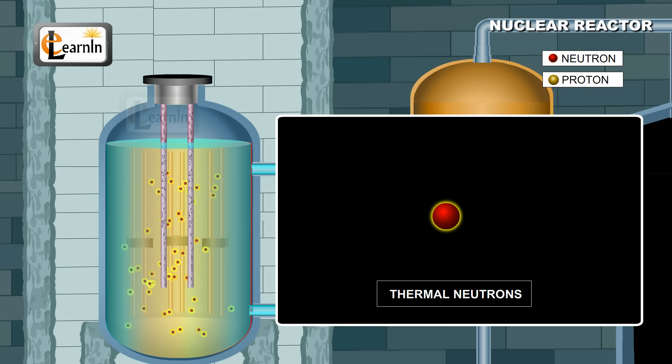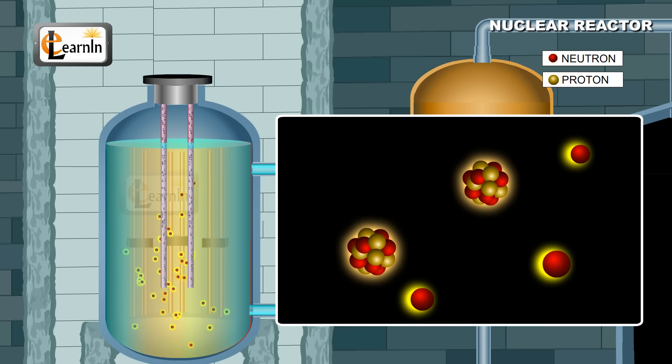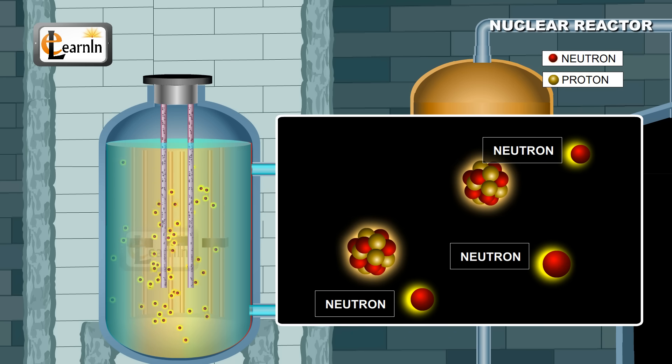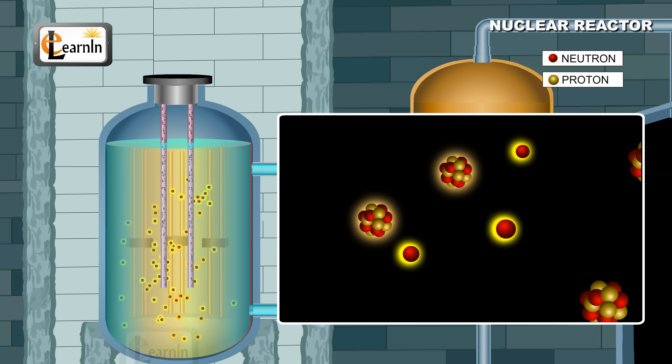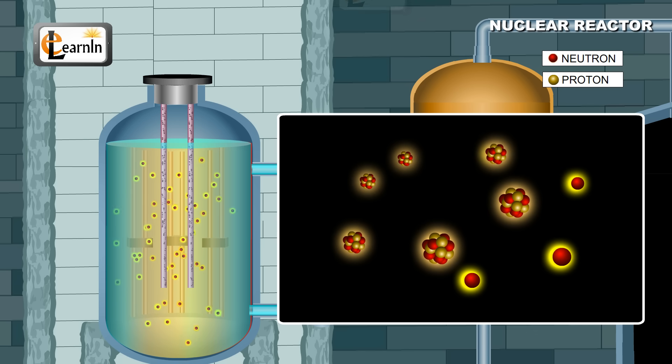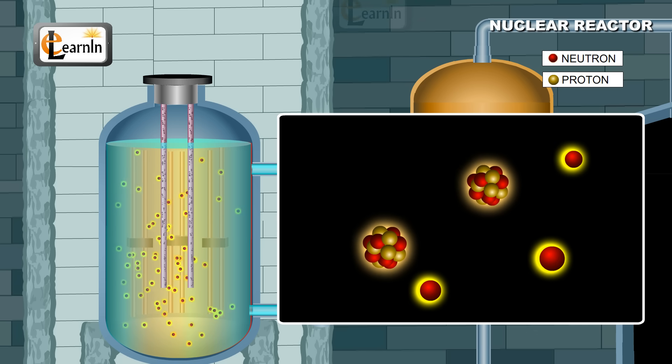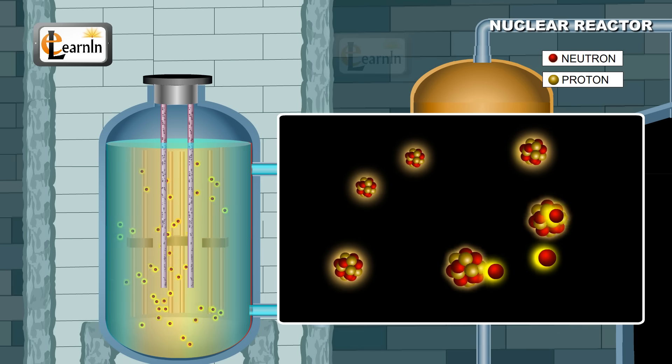Thermal neutrons, which are neutrons with energy of about 0.04 electron volts, are capable of producing fission reaction with uranium-235. During the fission reaction process, new neutrons are given out which have energies of about one MeV, or one mega electron volts. These neutrons typically escape from participating in another fission process as they are accompanied by enormous energy release.